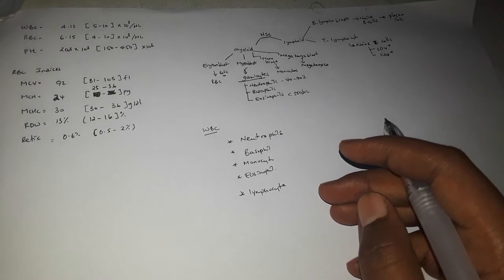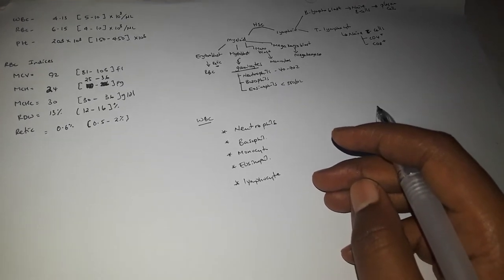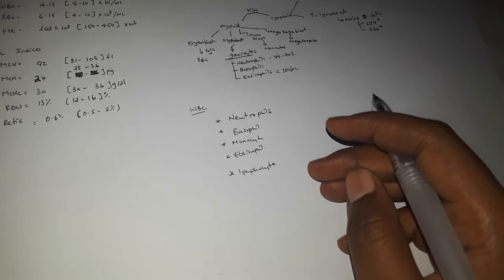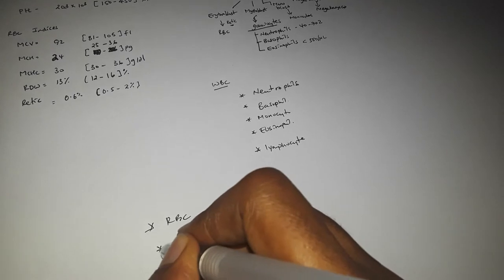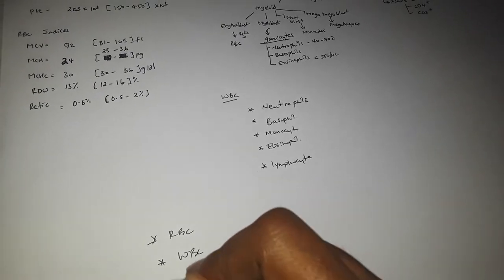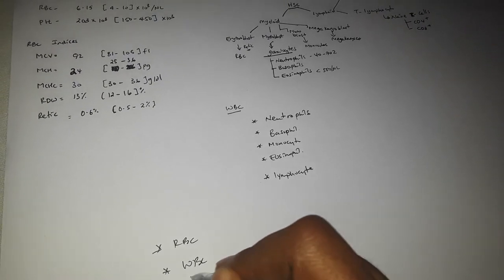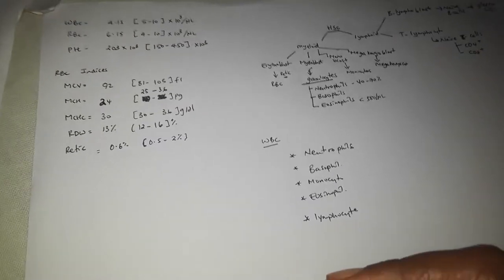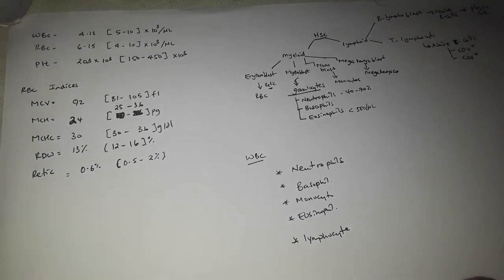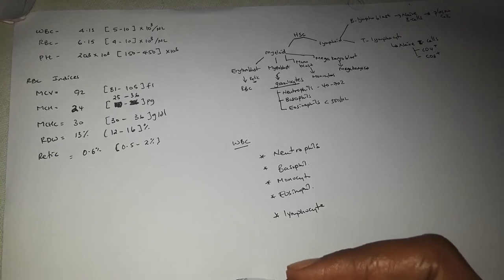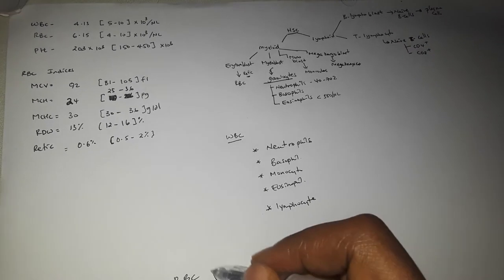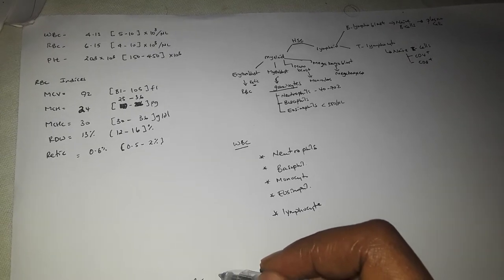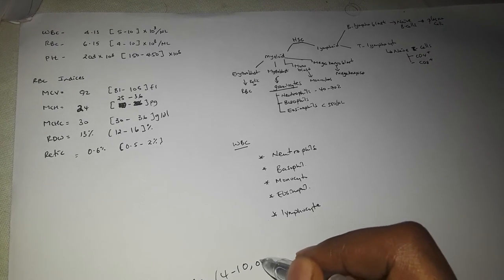CBC stands for Complete Blood Count. We have the cell count of the blood, and the reports give us the results we need to interpret.